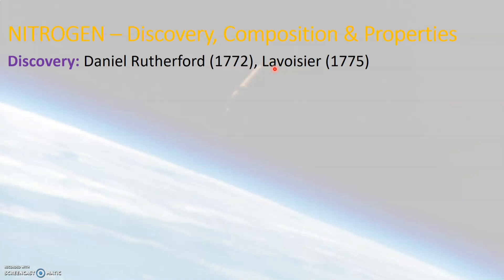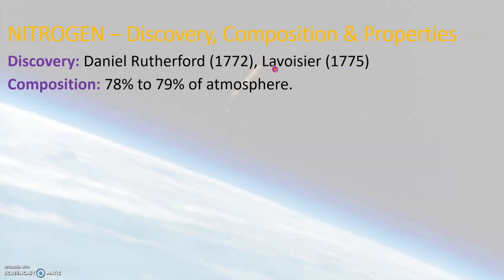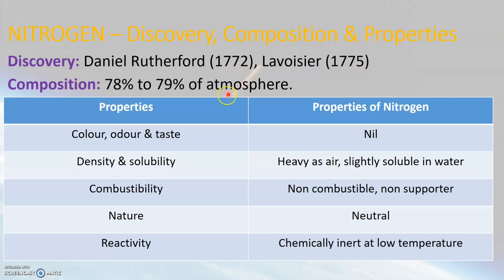About four-fifths of the air contains nitrogen gas, which means around 78 to 79% of the atmosphere consists of nitrogen gas. Now let us learn about a few important properties of nitrogen gas. Nitrogen is colourless, odourless, and tasteless in nature. When it comes to density, nitrogen gas is as heavy as that of air, but nitrogen gas is only slightly soluble in water.